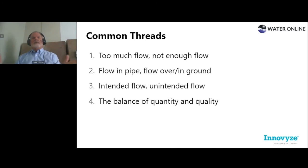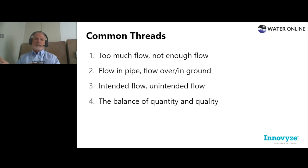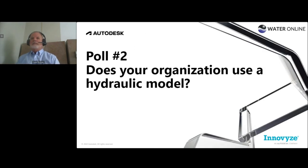Common threads include: too much flow or not enough flow — flow in the pipe, flow over or in the ground, intended flow, and unintended flow like leaks. We're constantly balancing quantity and quality. Miles, how about our next poll?